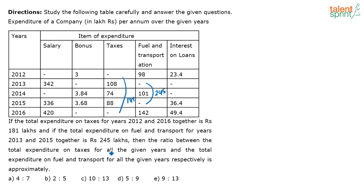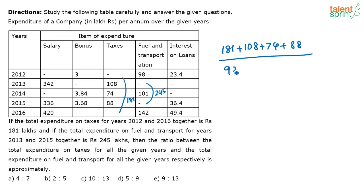Then the ratio between the total expenditure on taxes for all the given years and the total expenditure on fuel and transport for all the given years respectively is approximately what? So you just have to add these figures divided by the addition of these figures. We have to do 181 plus 108 plus 74 plus 88, divided by 98 plus 245 plus 101 plus 142.